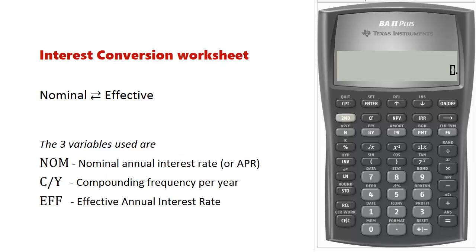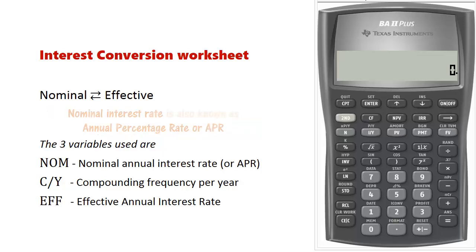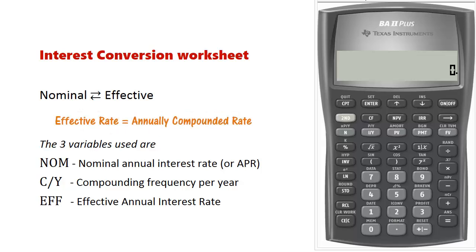The interest conversion worksheet on the BA2 Plus calculator converts interest rates between nominal rate and effective annual rate. The nominal rate is basically the interest rate not compounded annually — it's also known as the annual percentage rate. The effective annual rate simply implies annual compounding, that is once a year.